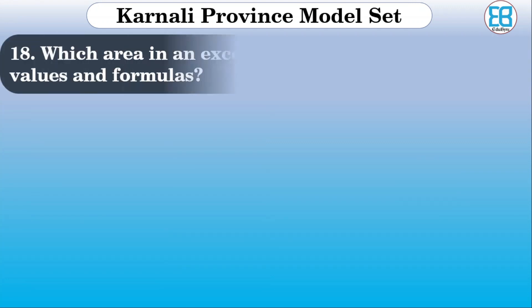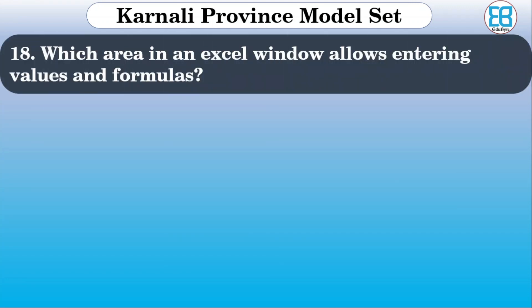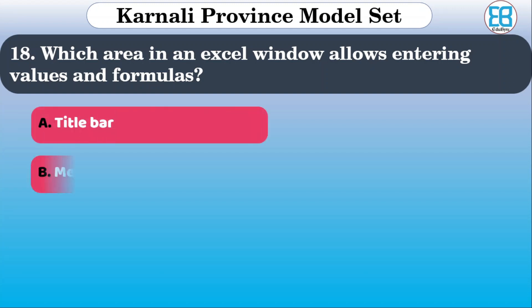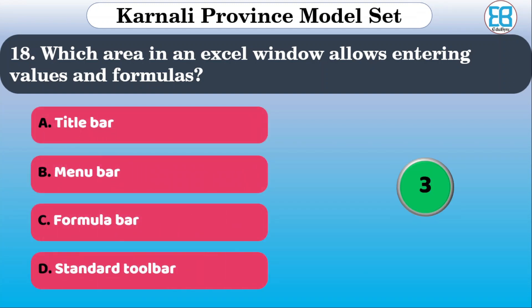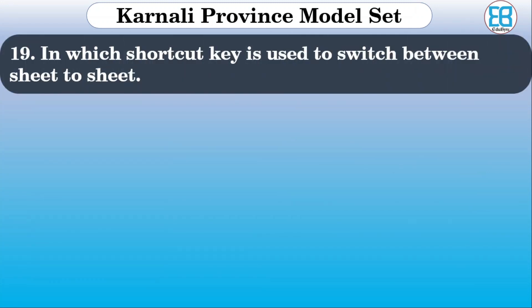In Excel, which area is used for entering values and formulas? The options are: title bar, menu bar, formula bar, standard toolbar. The correct option is formula bar.